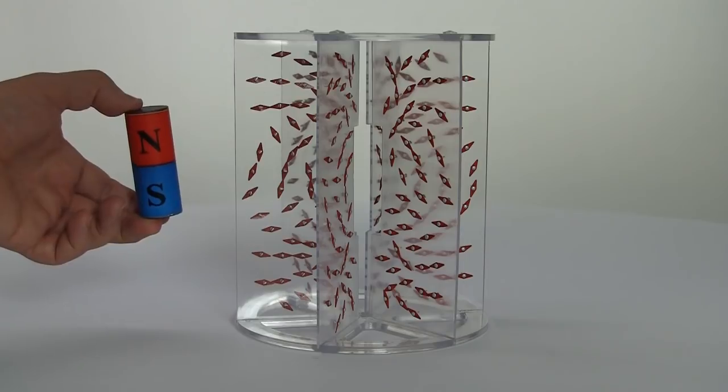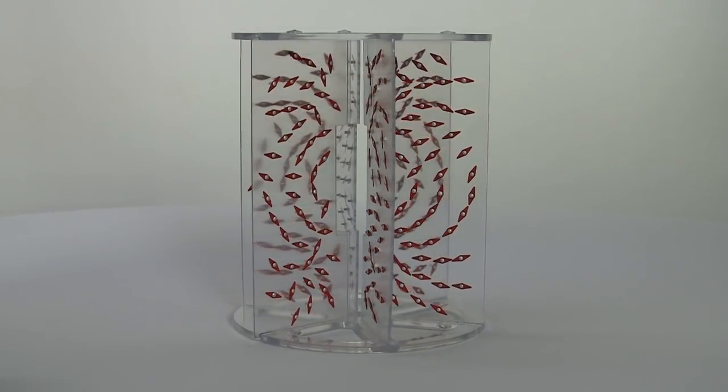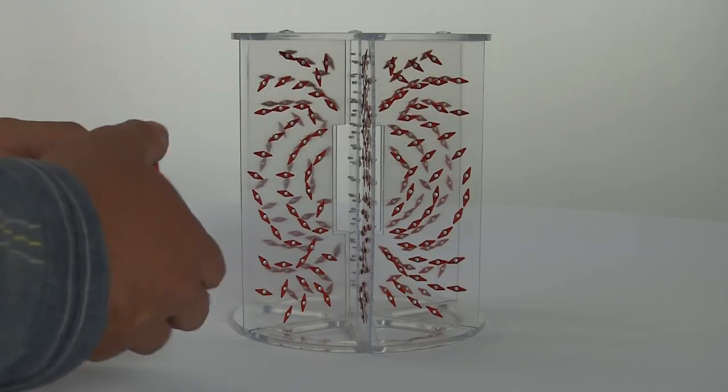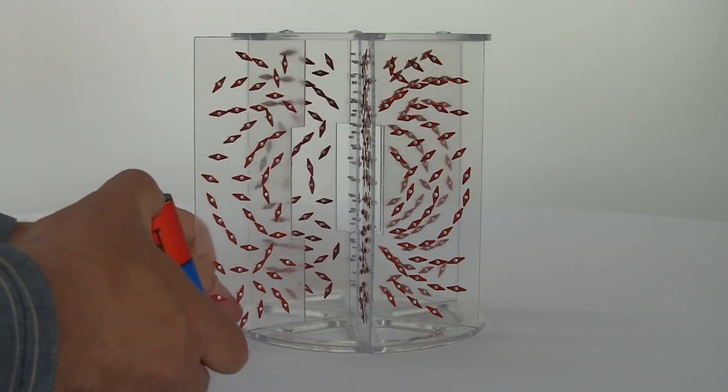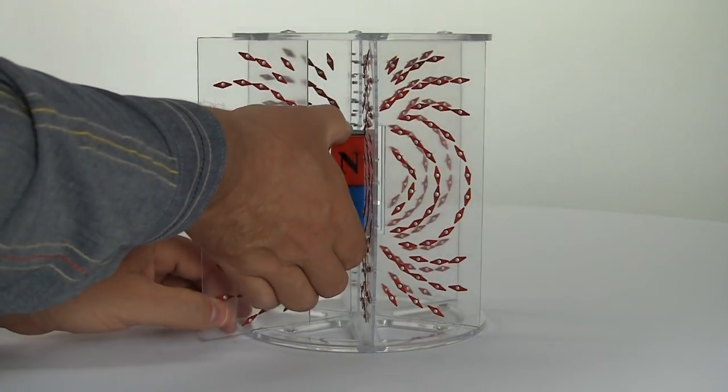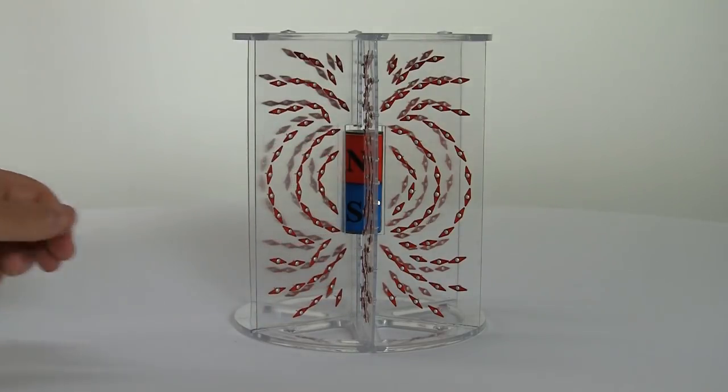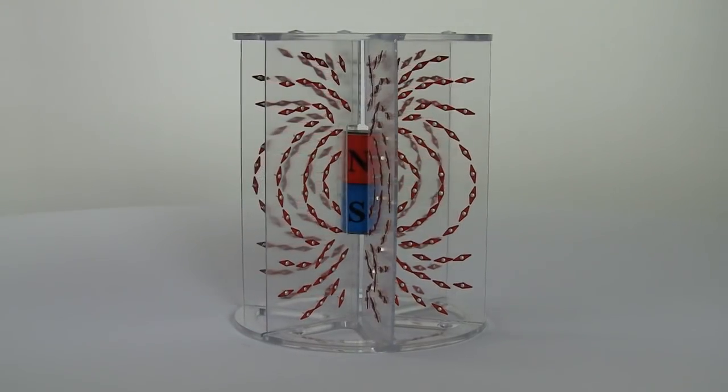So let's see what the magnetic field lines look like around the whole bar magnet. Now the field demonstrator has a removable panel. You insert the bar magnet, slide the panel back in again, and there we have it.